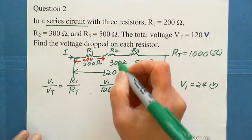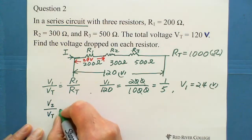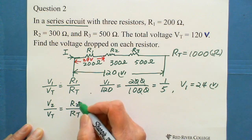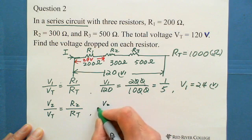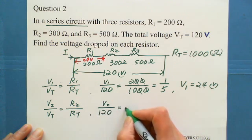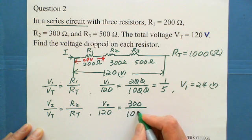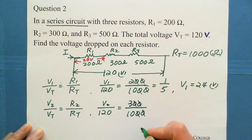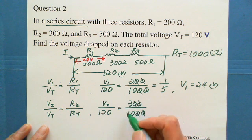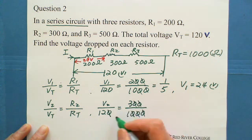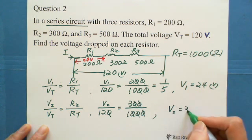For the second resistor, we write V2 over V total equals R2 over R total. This is a direct proportion — voltage is directly proportional to resistance. So V2 over 120 equals 300 over 1,000. Cancel zeros to get the ratio 3 over 10. Cross multiplication gives V2 equals 36 volts.